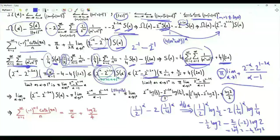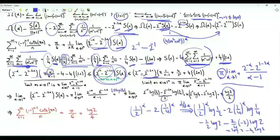Multiplying log(2)/2 by 1/(2π), and recalling the π/6 term, we get that the sum over positive integers n of minus 1 to the n minus 1 times the hyperbolic cotangent of πn, all divided by n, equals π/6 + log(2)/4.